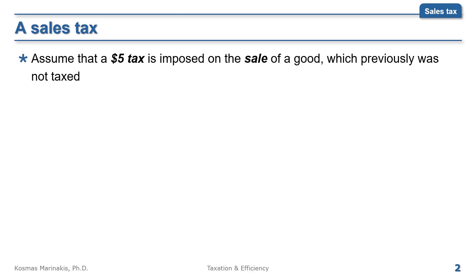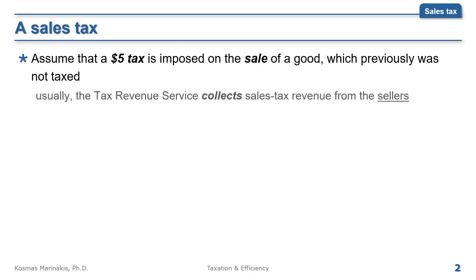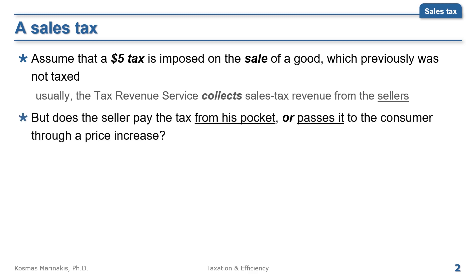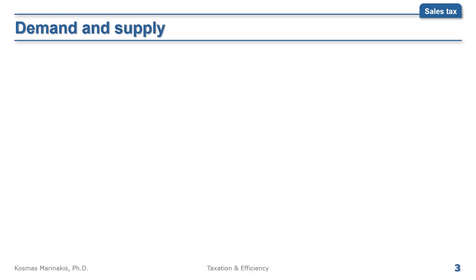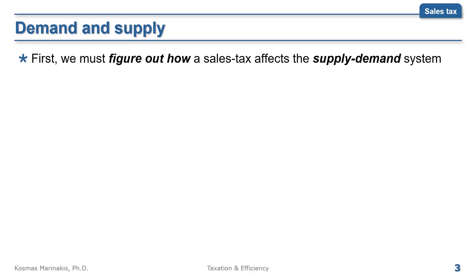Assume that a $5 tax is imposed on the sale of a good which previously was not taxed. Usually the seller is the one who is responsible to pay the tax to the revenue service after every sale. But does the seller pay the tax from his pocket or pass it to the consumer through a price increase? We will use demand and supply analysis to answer this question, so we must first figure out how a sales tax affects the supply-demand system.